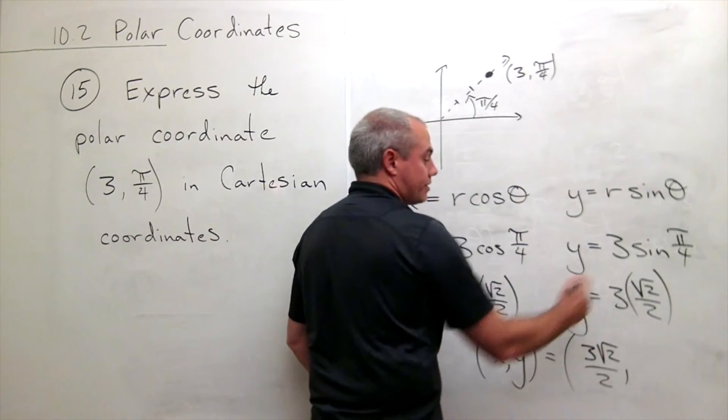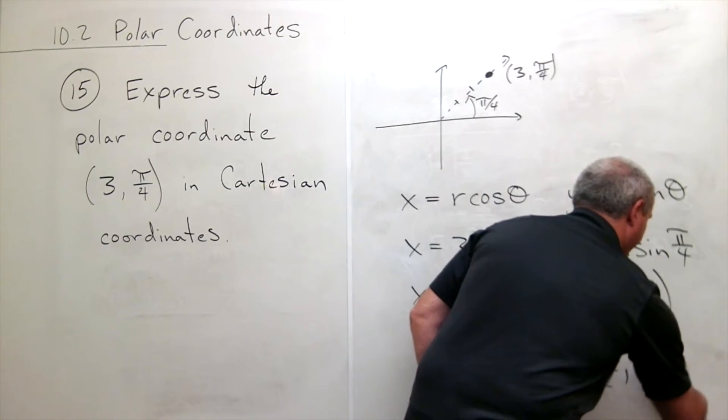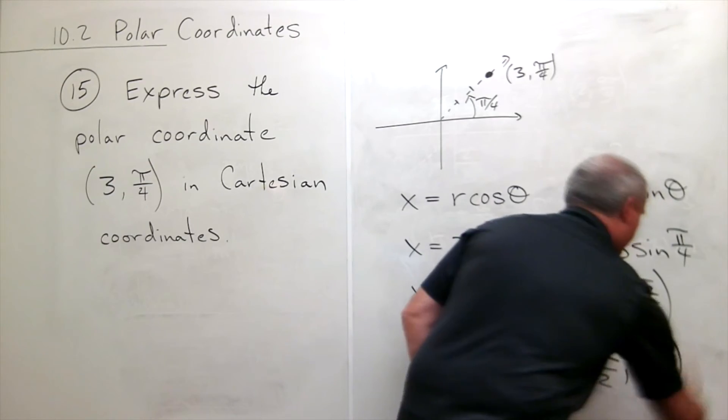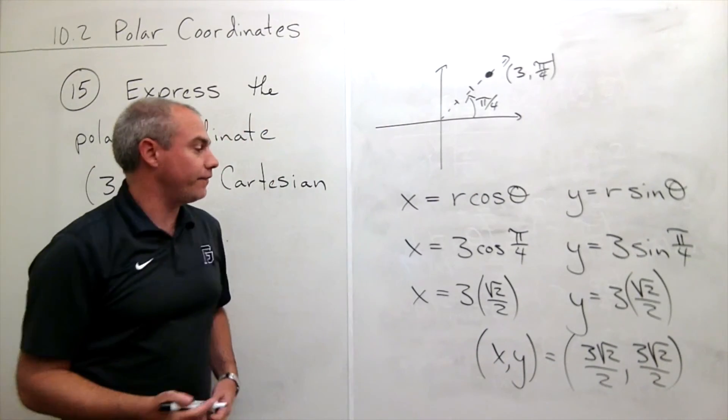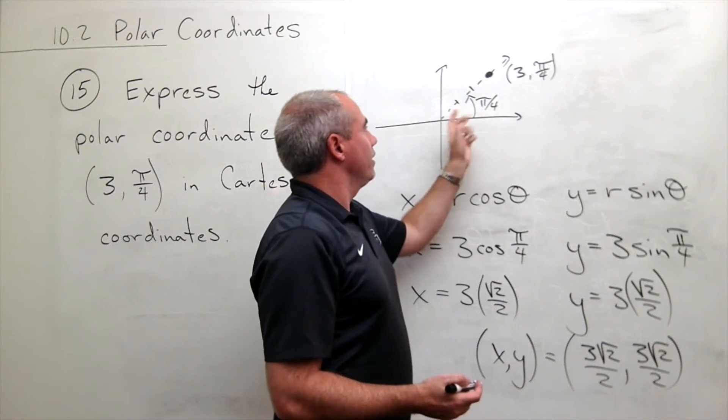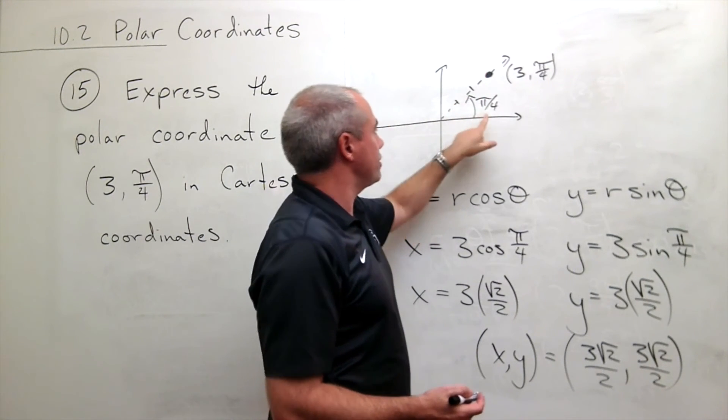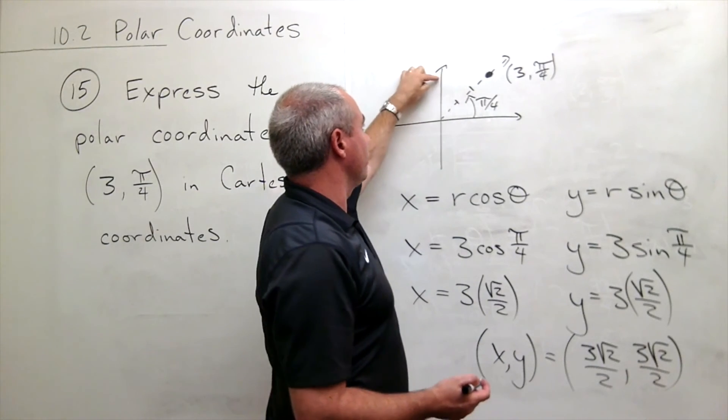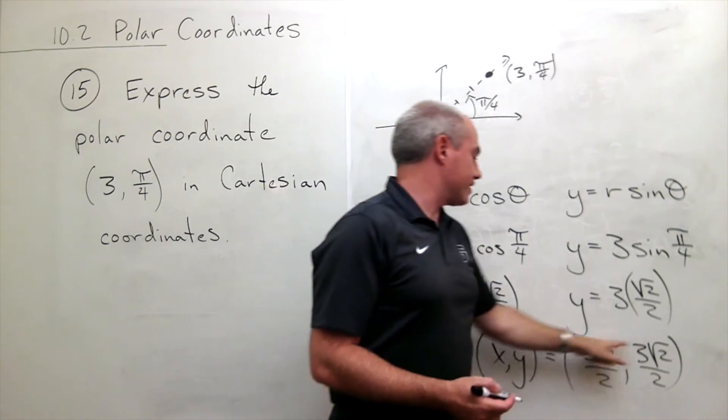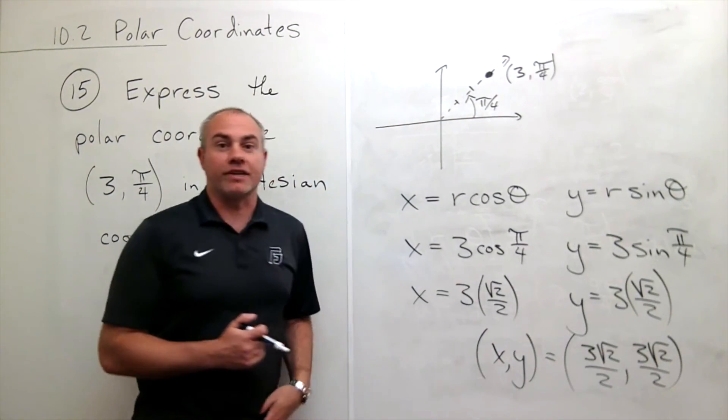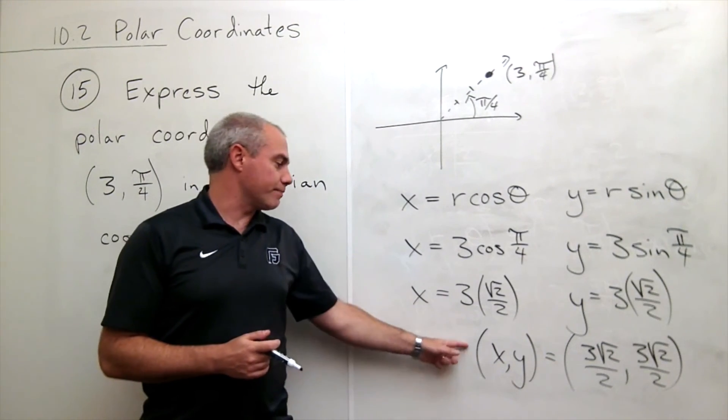And y is also 3√2/2. Both of those are positive. And if I kind of look at this thing, if this is out three units this way, this should be just a little bit less than three, a little bit less than three, and that's exactly what I have here. So it even seems right. So here is my answer.